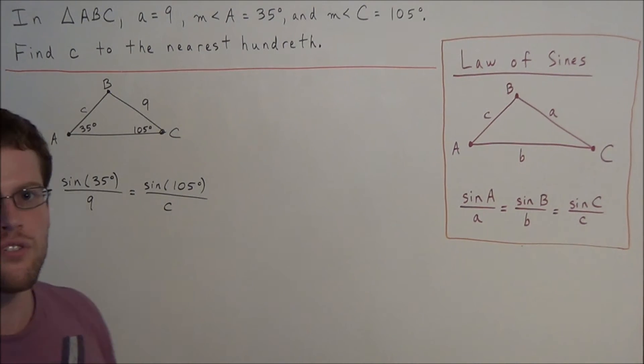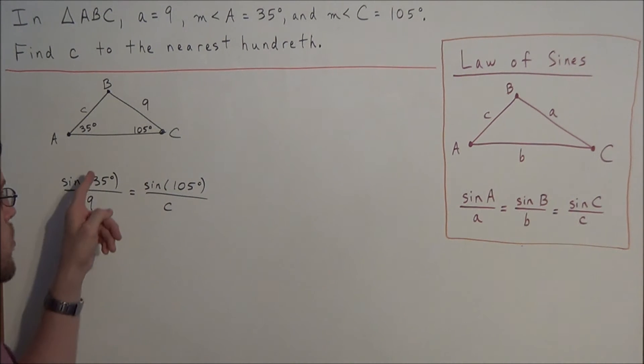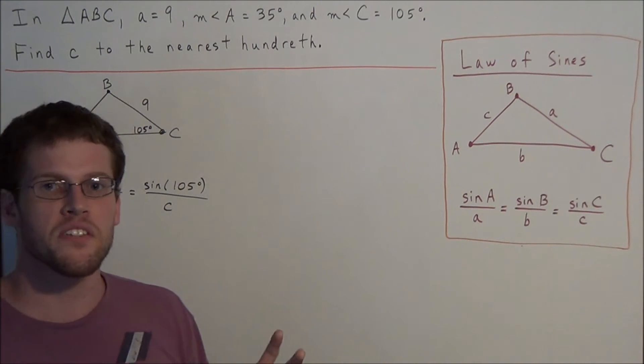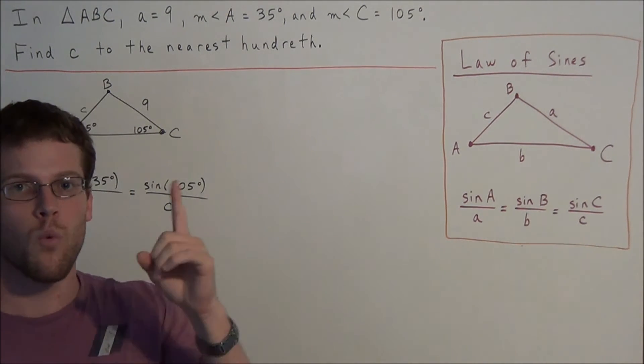But remember, with any equation you're using, you always want to reduce it to one unknown. Notice how we have three pieces of information that we do know. We know the two angles and we know one of the side lengths. So we're using those three pieces of known information to find the one unknown.